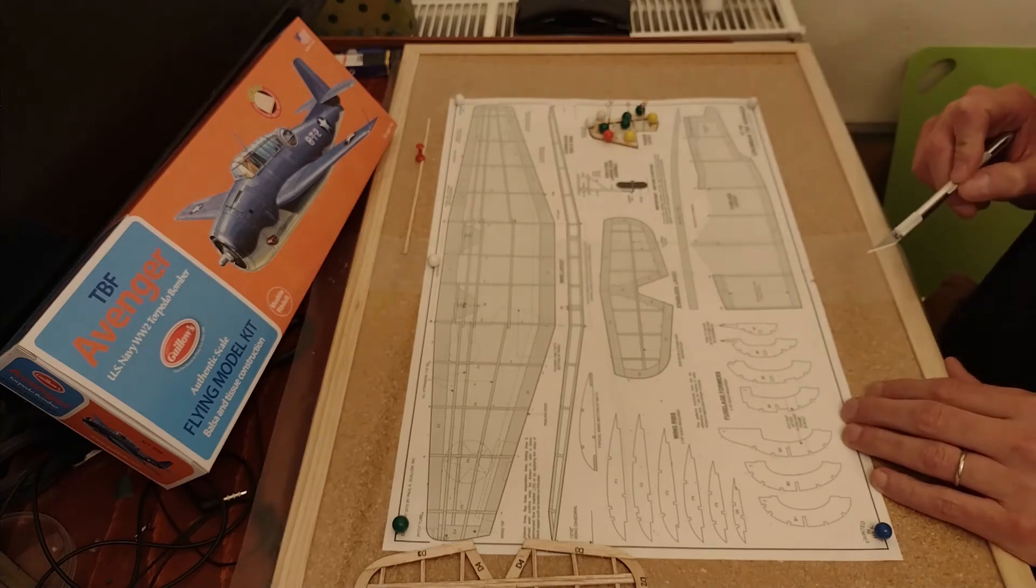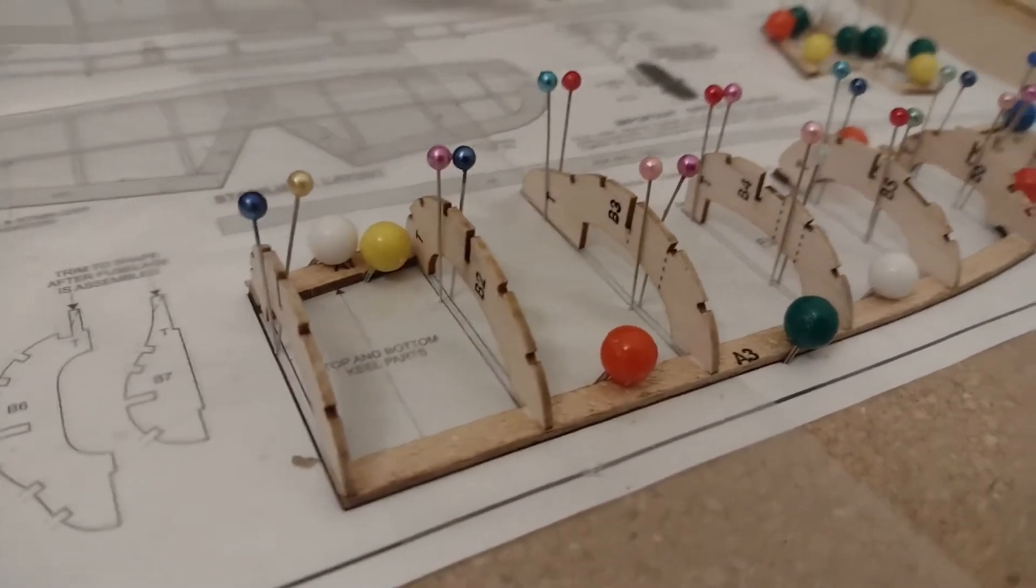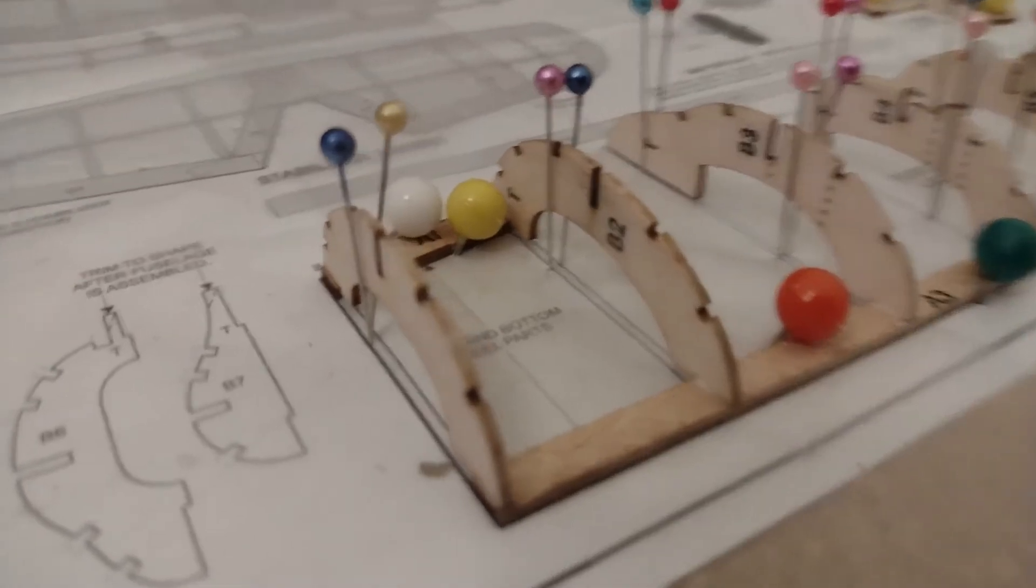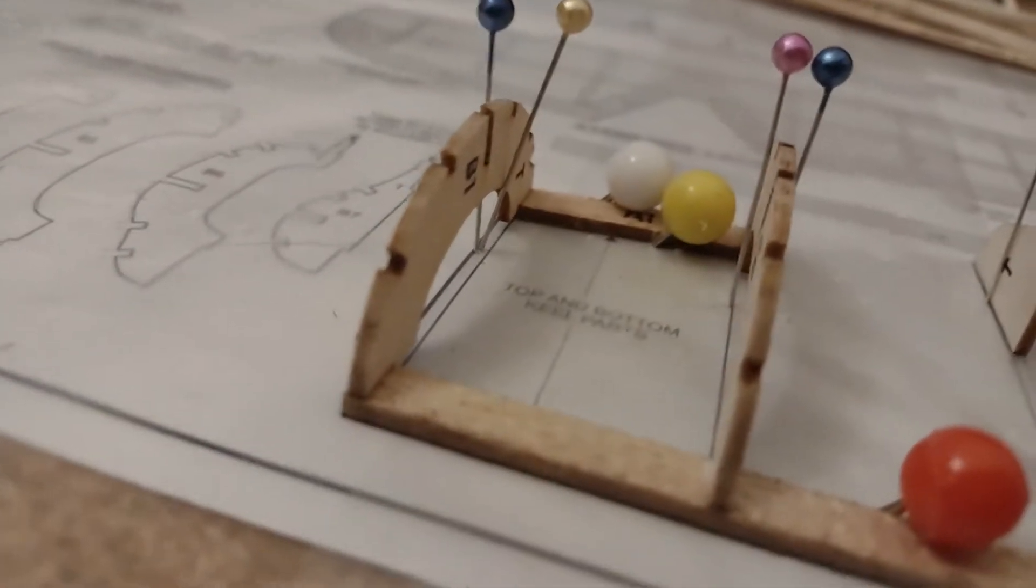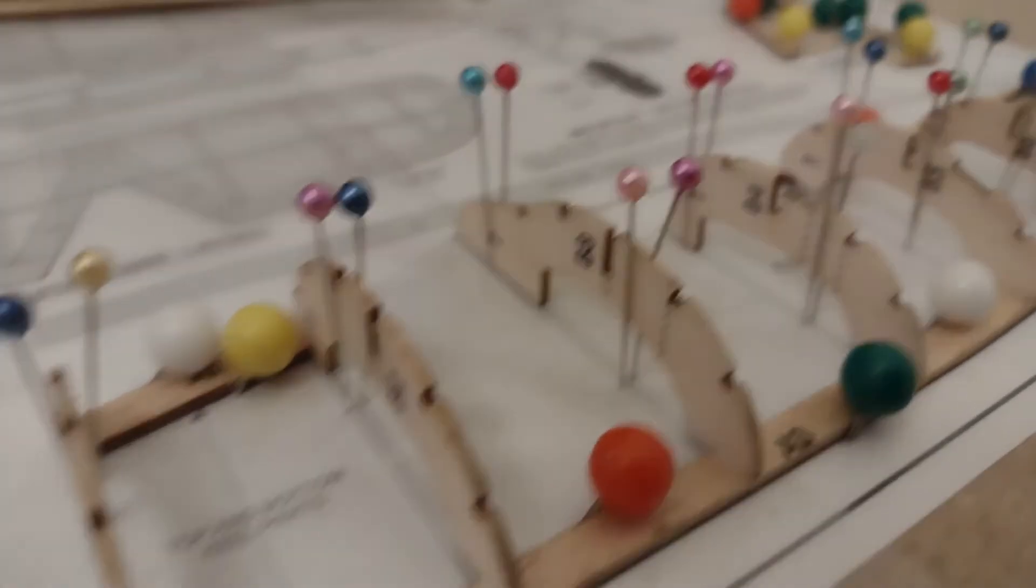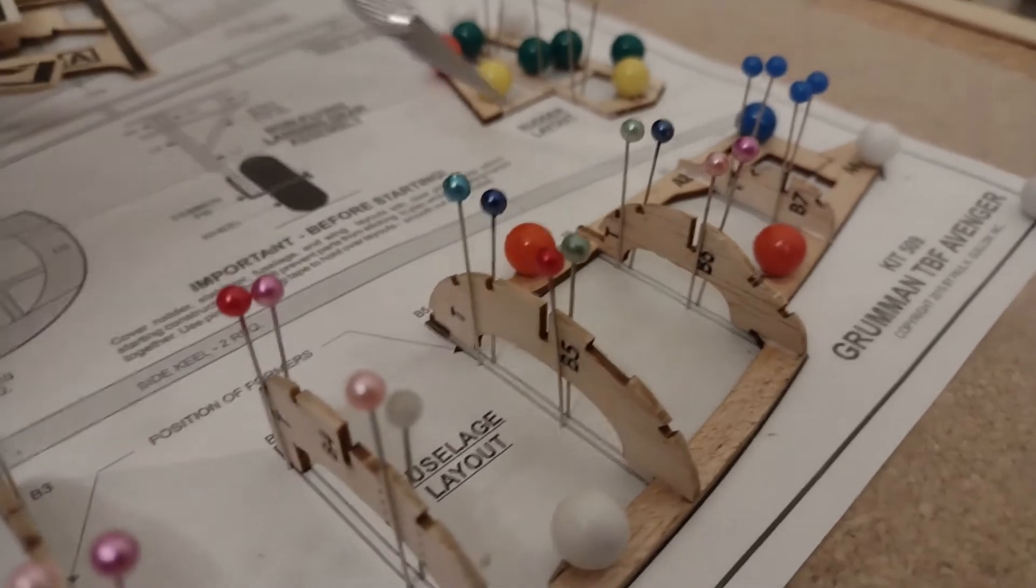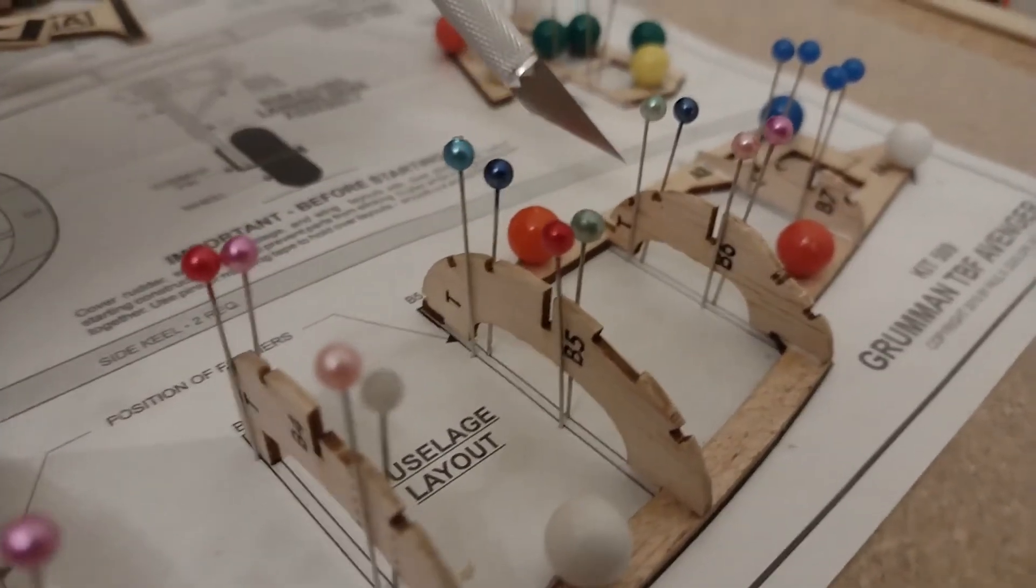I've put in all the fuselage formers. As you see, they're numbered. I put the first one backwards like the other one, but it doesn't really matter, it still works. There's so much detail that's very well cut with the laser.